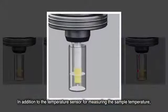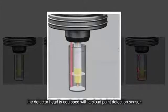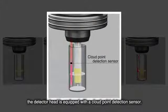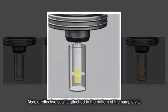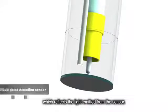In addition to the temperature sensor for measuring the sample temperature, the detector head is equipped with a cloud point detection sensor. Also, a reflective seal is attached to the bottom of the sample vial which reflects the light emitted from the sensor.